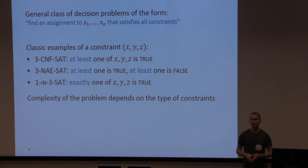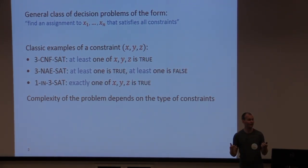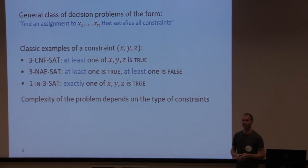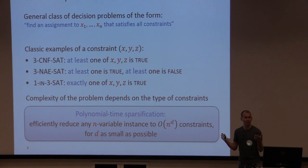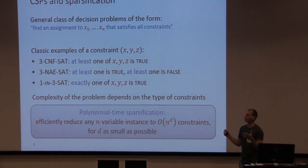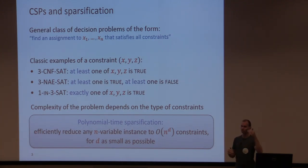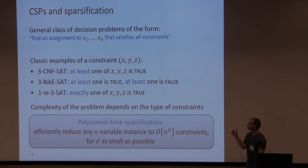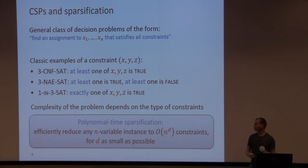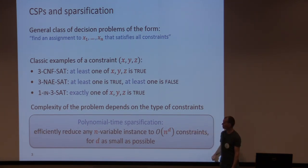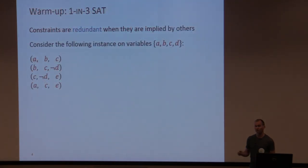You can have a 3-CNF SAT instance where a constraint on three variables X, Y, Z says at least one must be true. There's the not-all-equal variant demanding the variables don't all take the same value. There's one-in-three SAT where exactly one of the three variables must be true. The complexity of this problem depends on the type of constraints allowed, and we'll see that 3-CNF SAT differs from one-in-three SAT in the sparsification regime even though both are NP-complete classically.